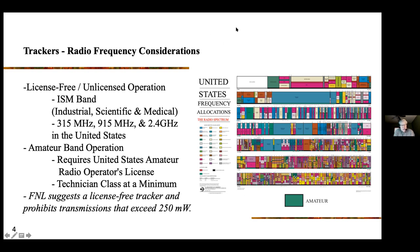There are other ISM bands that can be allocated internationally, but those are out of scope here. For amateur band operation, you basically just need a United States amateur radio operator's license at least at the technician level — that's the entry-level class and it's pretty easy to get. If you have any interest, you can contact me and I can connect you with a local ham group, called Elmers, in your area.